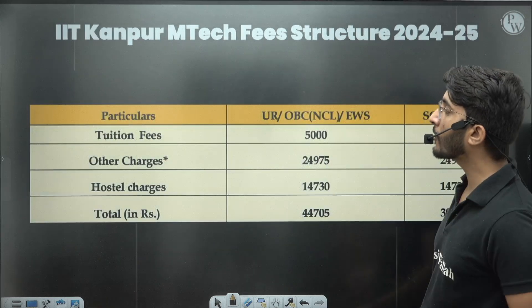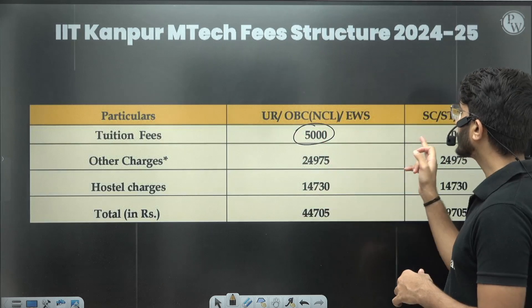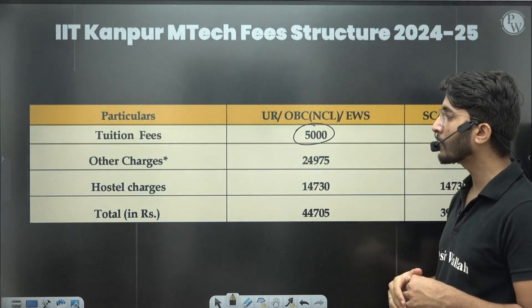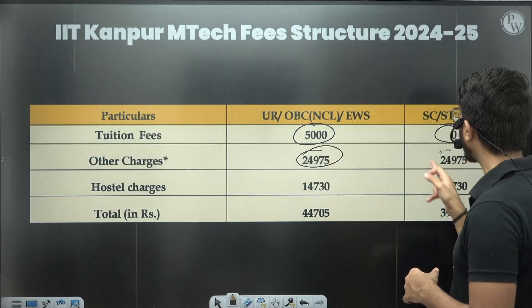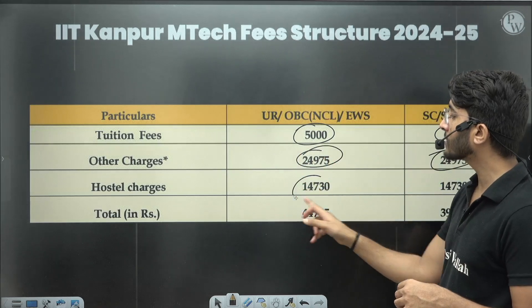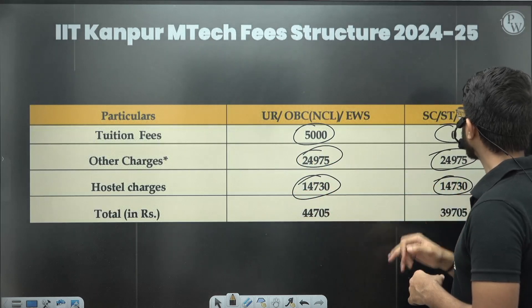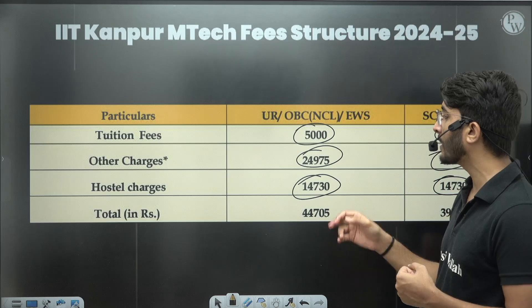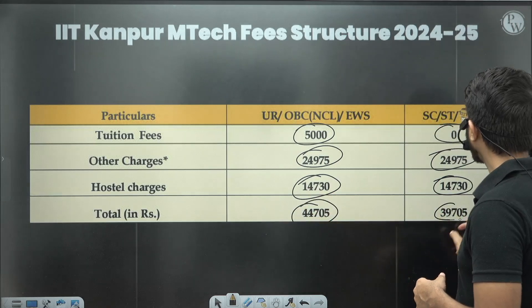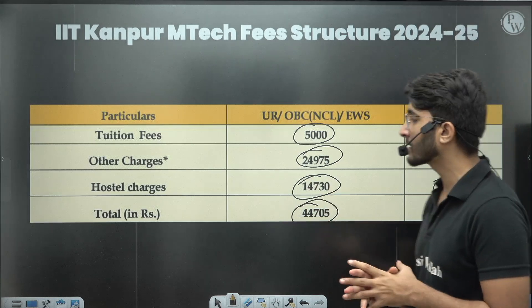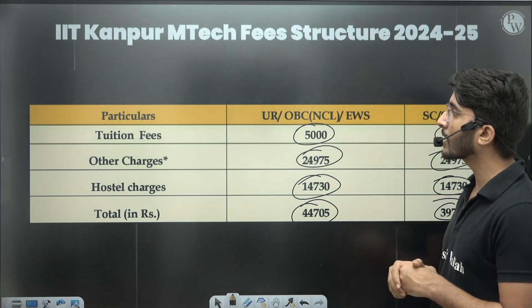If we talk about IIT Kanpur, tuition fees is ₹5,000 for General, OBC, and EWS categories. For SC/ST/PwD there are no tuition charges. Other fees are ₹24,975 for both categories, hostel charges are ₹14,730, and the total you need to pay is ₹44,705. For SC/ST/PwD the total is different as tuition fees are waived.